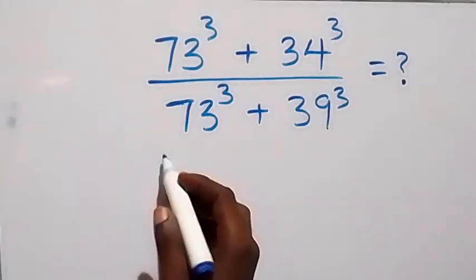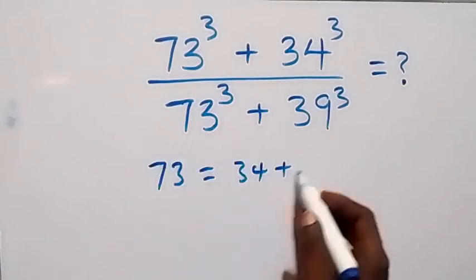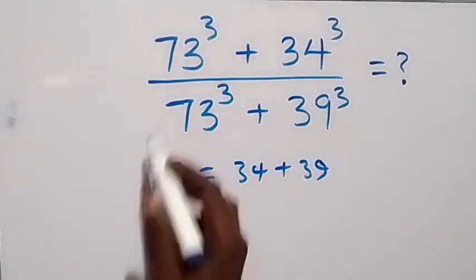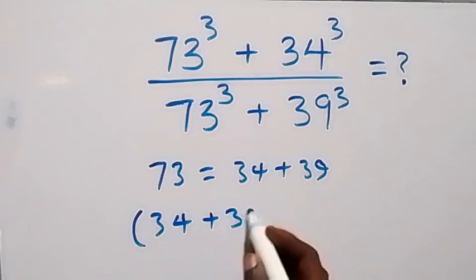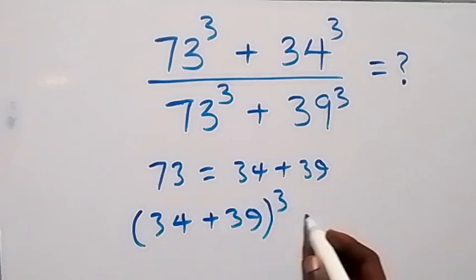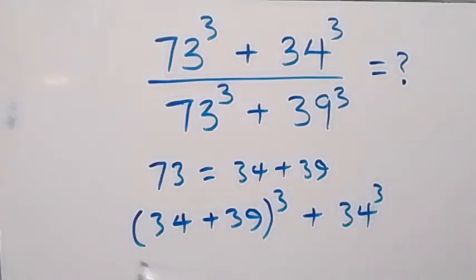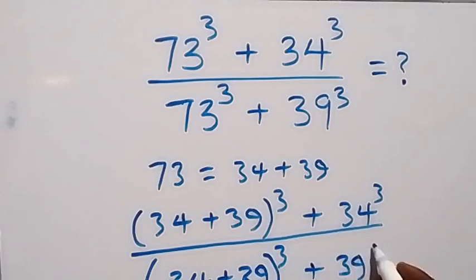From here, let's represent 73 as 34 plus 39. So we can rewrite this as (34 plus 39) raised to power 3 plus 34 raised to power 3, divided by (34 plus 39) raised to power 3 plus 39 raised to power 3.